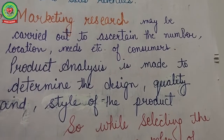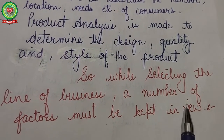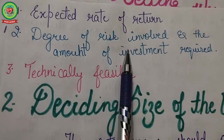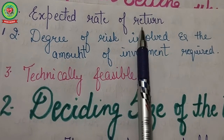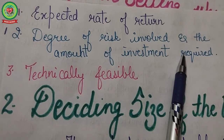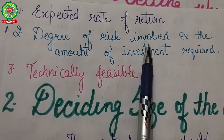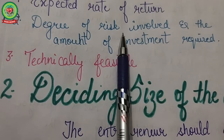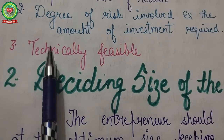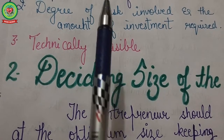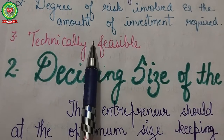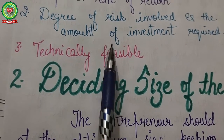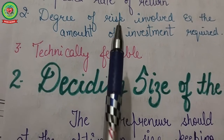While selecting the line of business, a number of factors must be kept in view. First, the expected rate of return must be fair, keeping in view the risks involved and the amount of investment required. Second, the degree of risk involved should be such that the entrepreneur is willing and able to undertake. Third, the line of business chosen must be technically feasible — requirements of finance, technology, skills, labor, and materials should be within reach of the promoter.